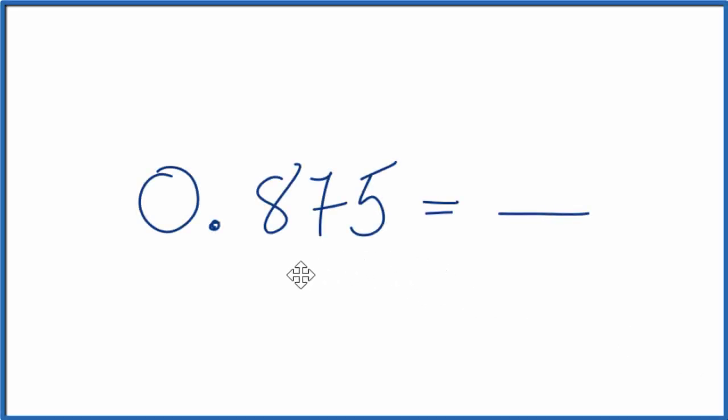So how do you express the decimal 0.875 as a fraction, like numerator over denominator? Let's take a look at that. First, let's consider this to be 0.875.